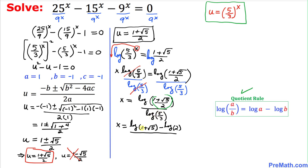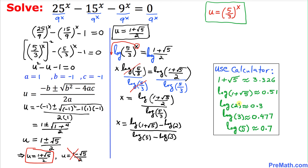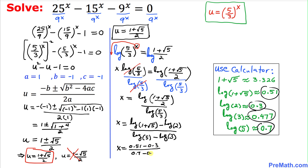Applying the quotient rule to the denominator as well gives log 5 minus log 3. Using a calculator: log(1 + √5) ≈ 0.51, log 2 ≈ 0.3, log 5 ≈ 0.7, and log 3 ≈ 0.477. Simplifying, x is approximately equal to 0.942.